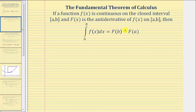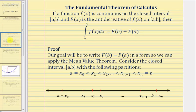Now let's work on our proof. For the proof, our goal is going to be to write big F of b minus big F of a in a form so that we can apply the mean value theorem.